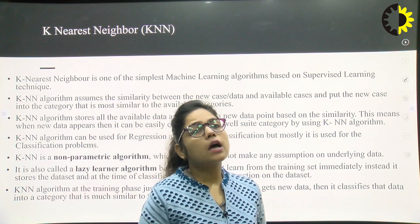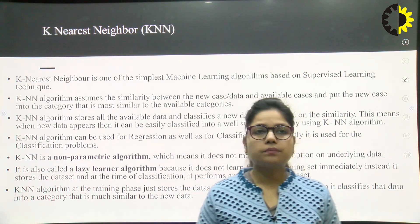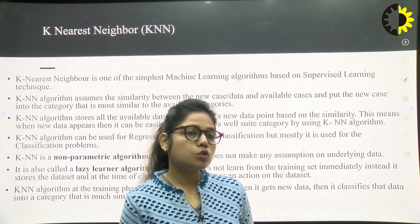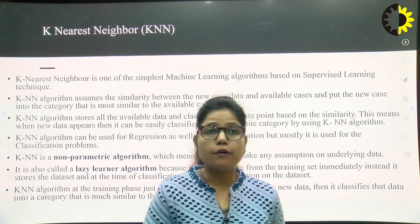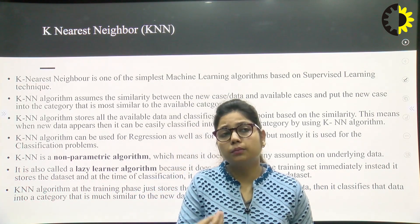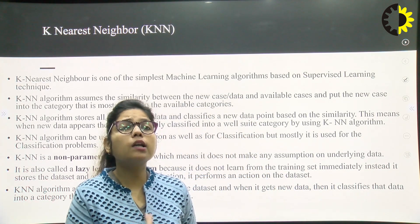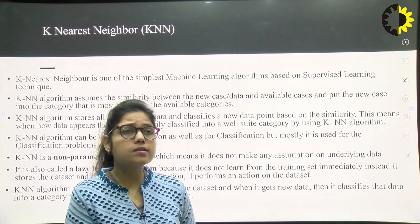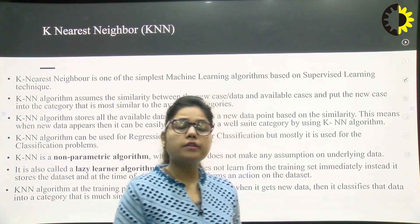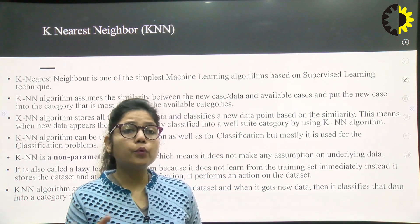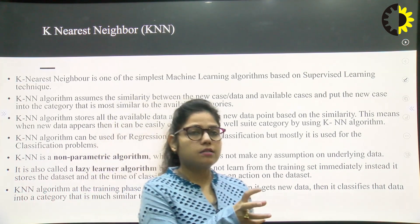In KNN, we have some data. According to that, we store some data and learn from it. After that, we apply Euclidean distance or Manhattan distance — we calculate the distance and put that particular data into those clusters.